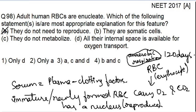The second option — they are somatic cells — is a very irrelevant statement. Somatic cells and the absence of a nucleus are nowhere related. Even if it is a somatic cell or a reproducing cell, the nucleus is necessary. So this is not the correct option.